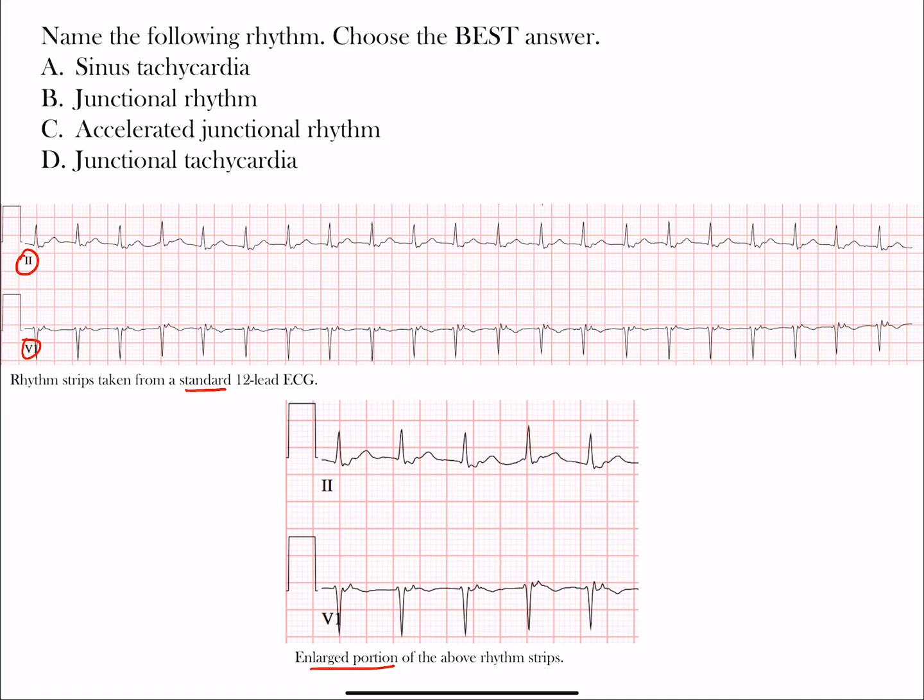You're going to look at these rhythms and choose the best answer: A. Sinus tachycardia, B. Junctional rhythm, C. Accelerated junctional rhythm, or D. Junctional tachycardia. Take a few moments, pause the video, try to figure it out, then restart and we'll go through this together.